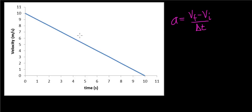On this graph, the acceleration represents the slope of the line. So on a velocity versus time graph, the acceleration represents the slope of the velocity curve.